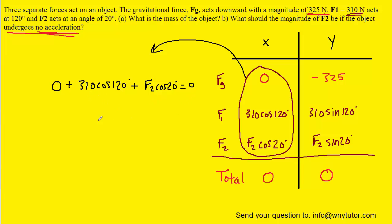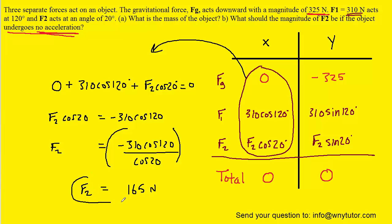And then we're going to try to solve for F2. So why don't we subtract 310 cos 120 over to the right-hand side. And then we can divide both sides of the equation by cos 20. That's going to allow us to solve for F2. And then what you want to do is pick up your calculator and type in this expression right here in parentheses, and just make sure that your calculator is in degree mode. And when you do that, you get about 165 Newtons. So this will be the correct answer for the magnitude of F2.